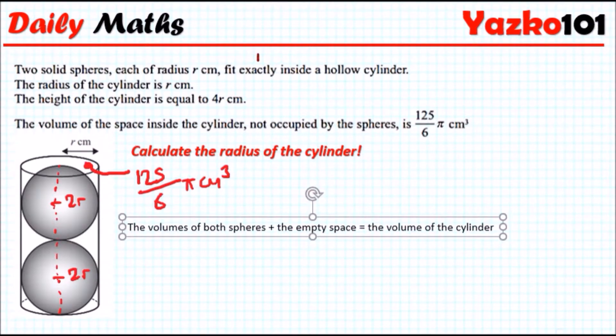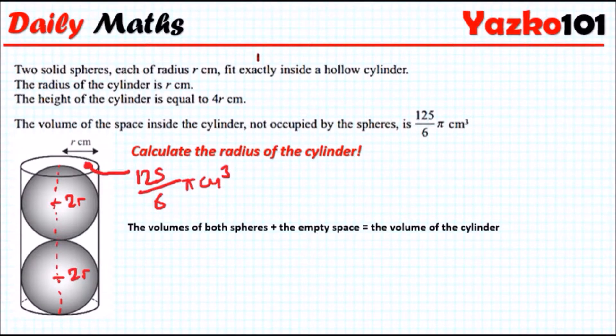So this is our equation to work with. If we can solve this equation, we can find the value of r. The volume of the sphere is 4 over 3π r cubed, given in your formula sheet. Because you have 2 spheres, we can just say 2 lots of these.